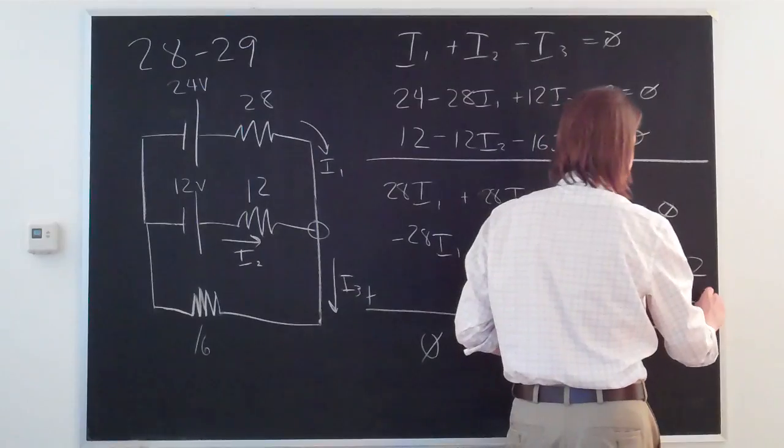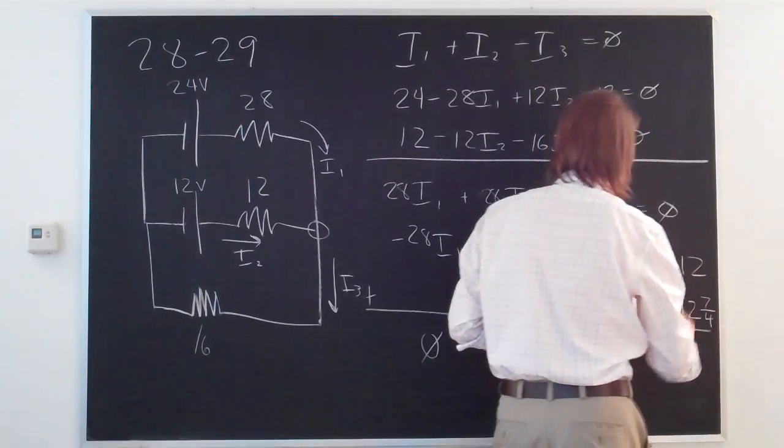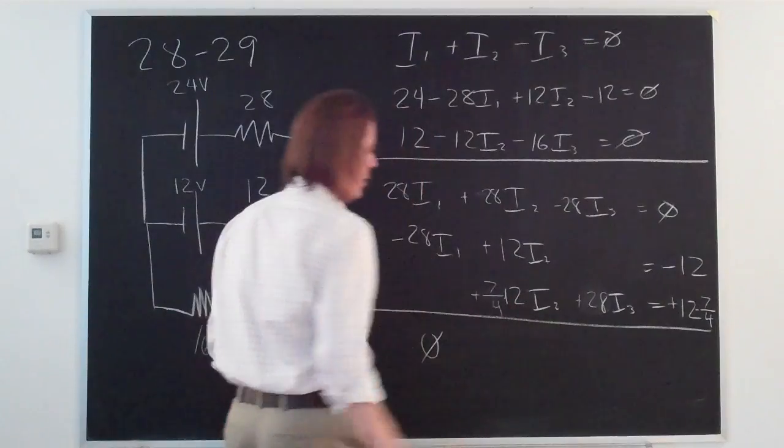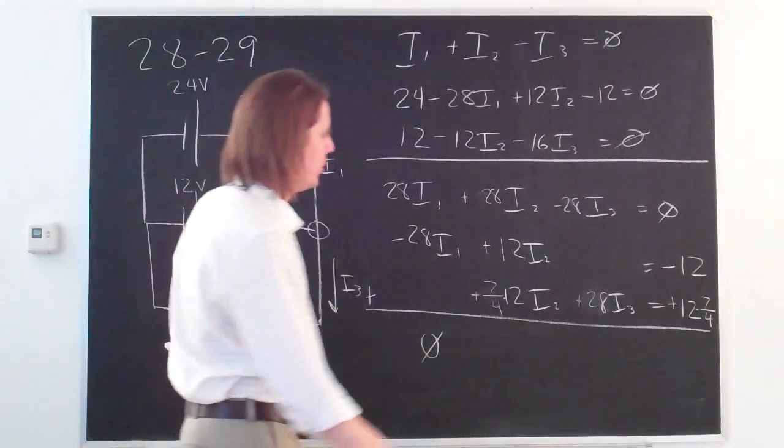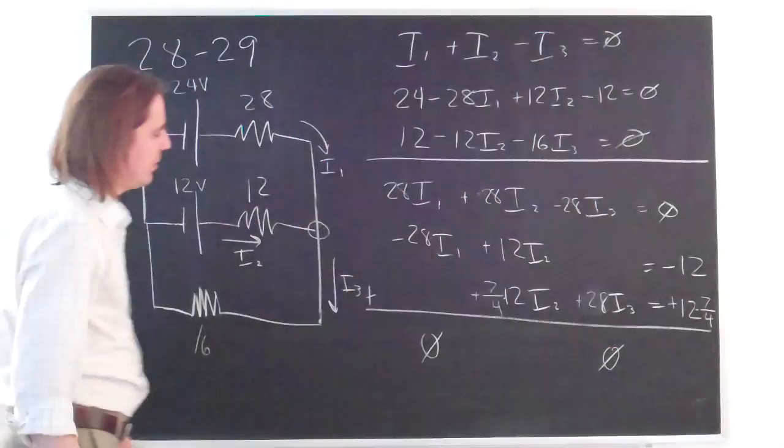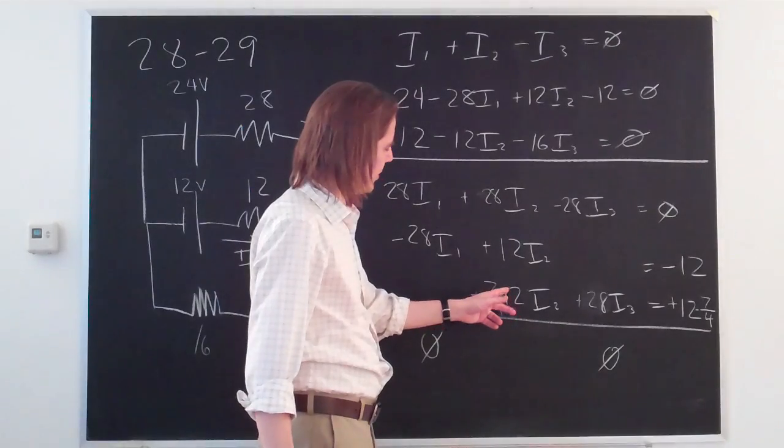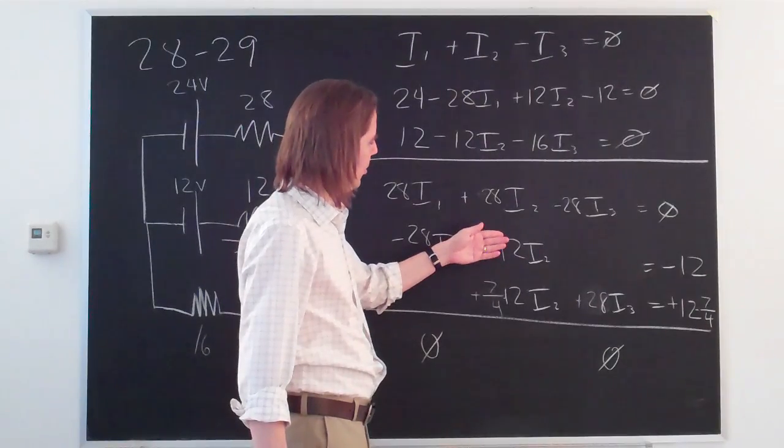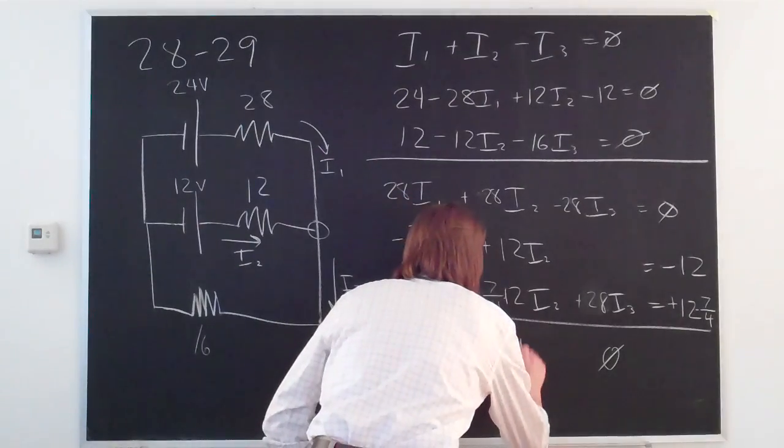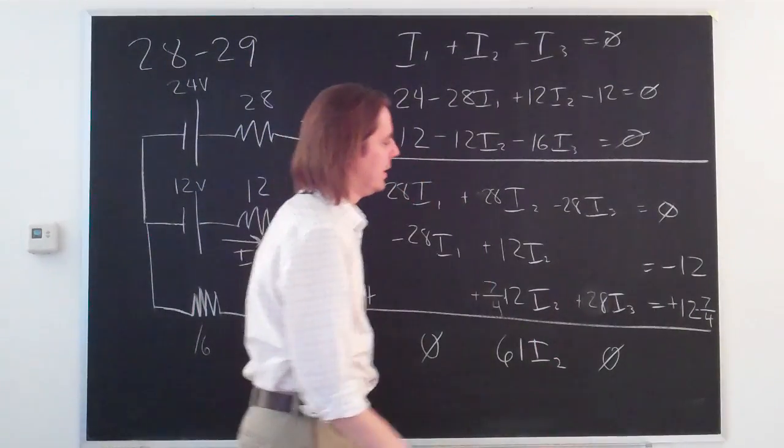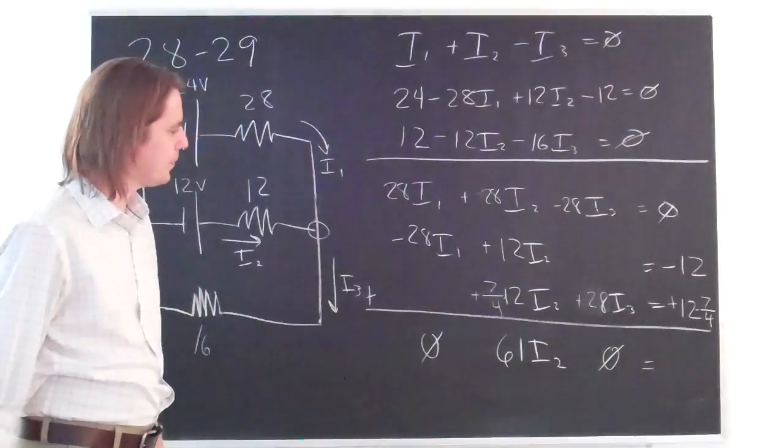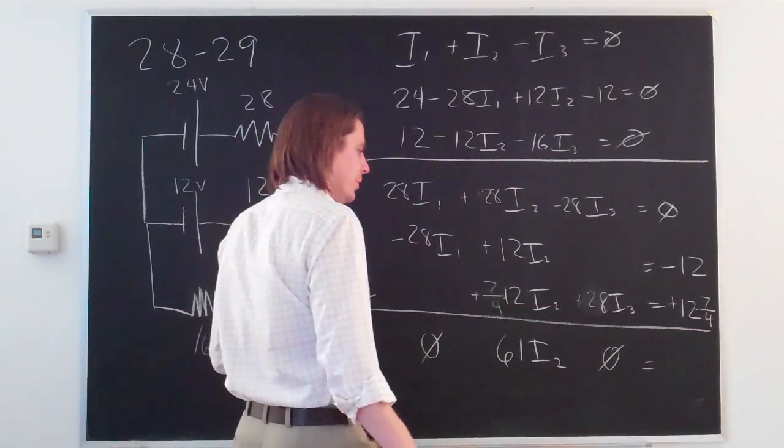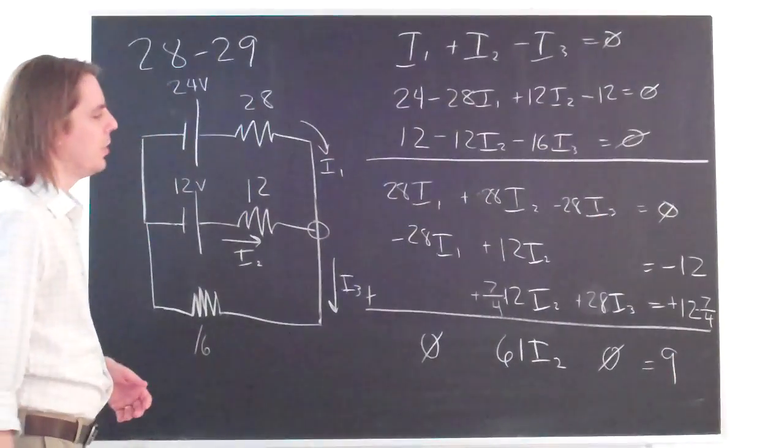But we have to multiply the whole equation. We multiply this by 7 over 4. So we add them up. And now our I1s went away. Our I3s went away. And all we're left with is I2 here. So 4 goes into 12, 3 times. 3 times 7 is 21. So this is really 21 plus 12 is 33 plus 28 is 61. So it's 61I2 equals whatever is left over here. So 61I2 equals 9.